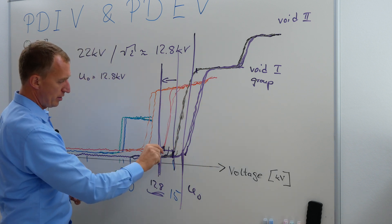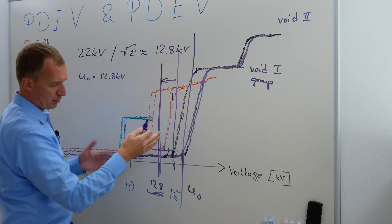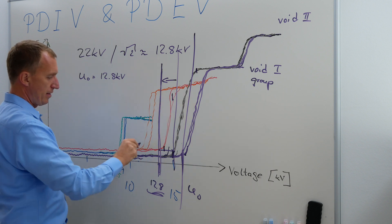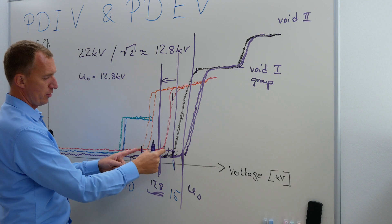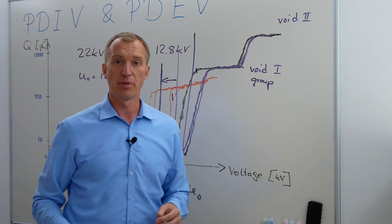So, same here. This would be more or less our inception voltage, or you could say this is an inception voltage. And this one here is the extinction voltage. So, this is the area that we have to worry about.